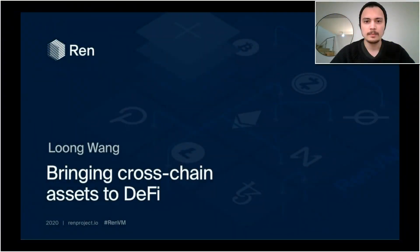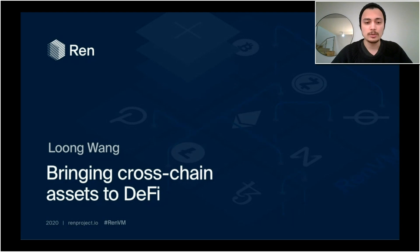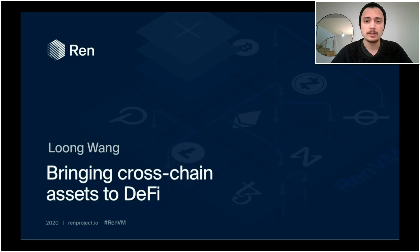Hey everyone. My name is Lung. I'm the Chief Technology Officer at the REN project. At the REN project, we're building REN VM, which is an interoperability bridge between blockchains. Today I want to talk about how we can use something like that to bring cross-chain assets to DeFi, what universal interoperability is, why it's important, some of the technical challenges, and how we can solve them and ultimately arrive at the solution that is REN VM.